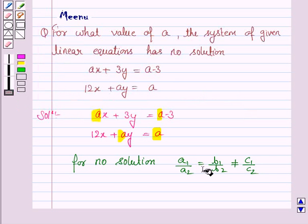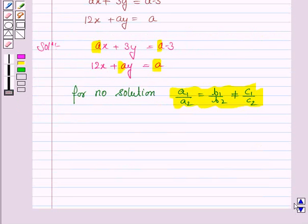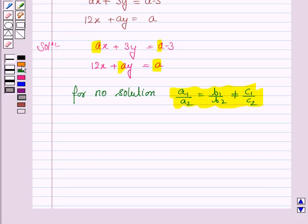You must remember this and write this while solving the question. So now, A1 is A, A2 is 12 equals B1 that is 3 upon B2 which is A, is not equal to C1 which is A minus 3 upon C2 which is A. Now we will use this to find the value of A.